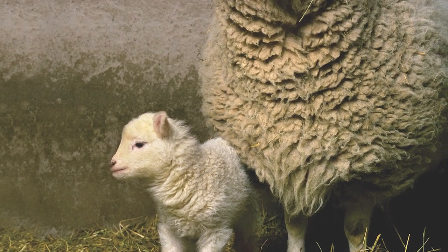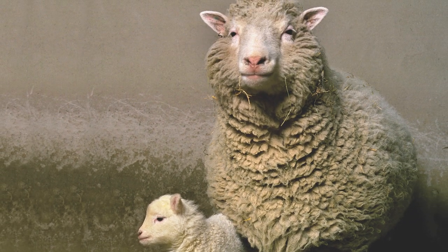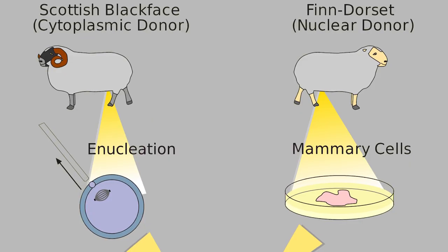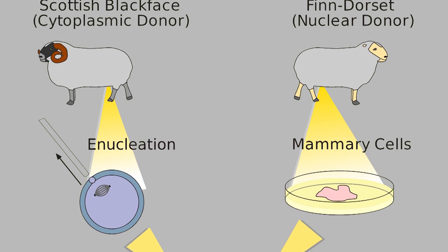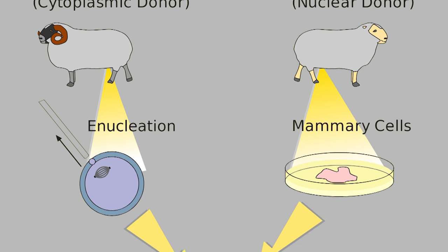The lamb, Dolly, did not carry any characters of the egg cell or the parent from whom the egg was taken. She was the first ever mammal to be cloned from an adult somatic cell.